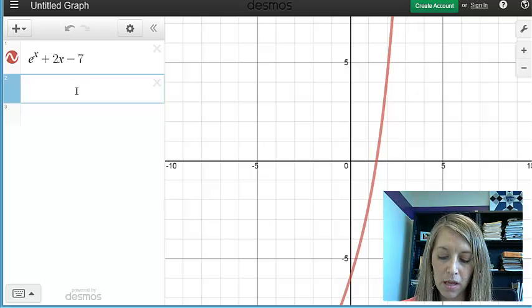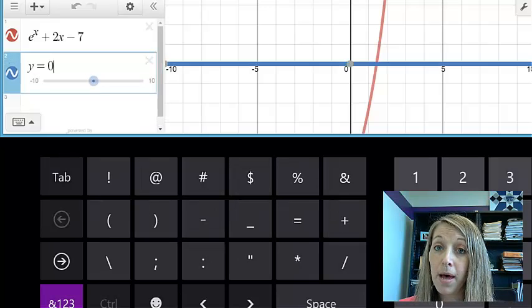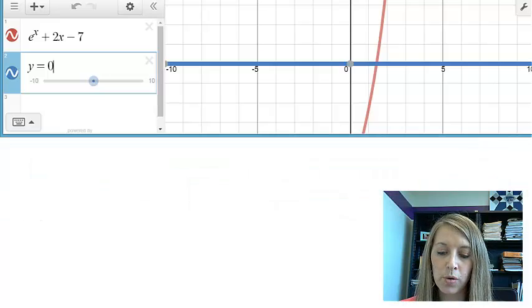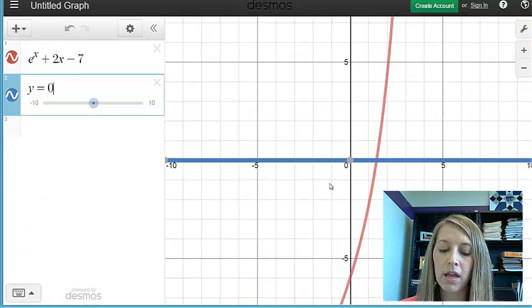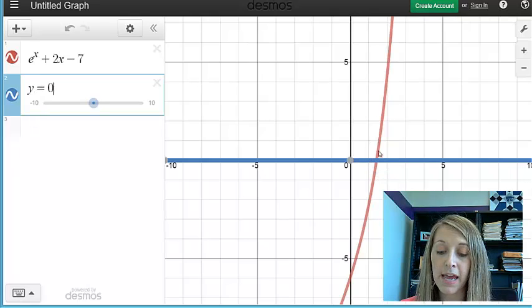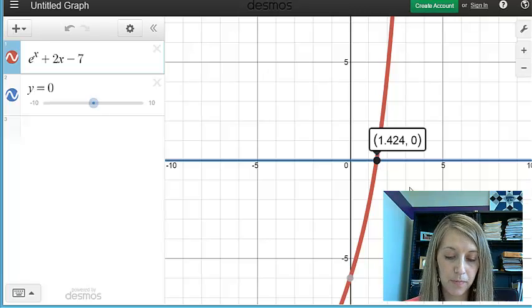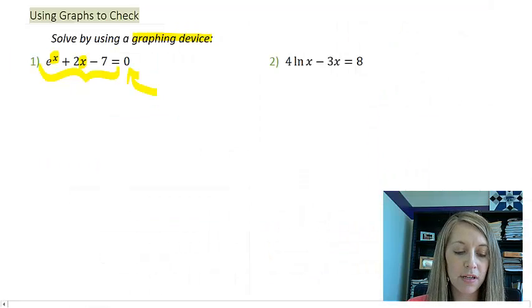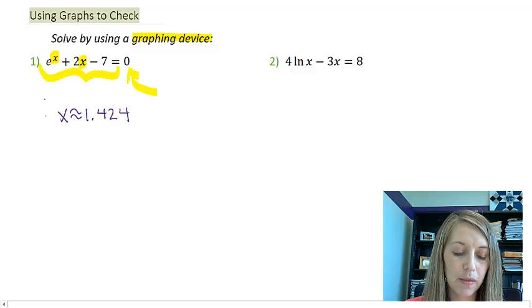If I plug in the right-hand side of my equation, which is y equals 0, it might not show up on your calculator as much as you expect it to be, because y equals 0 is the exact same thing as the x-axis. If you have color coded like mine is here, then it's a little easier to see. If we want to see where these intersect, we just basically need to pinpoint the intersection point. So that's happening right here. And so my solution to that is this guy right here, 1.424. And so, by using my graphing device, my answer is x is approximately 1.424.